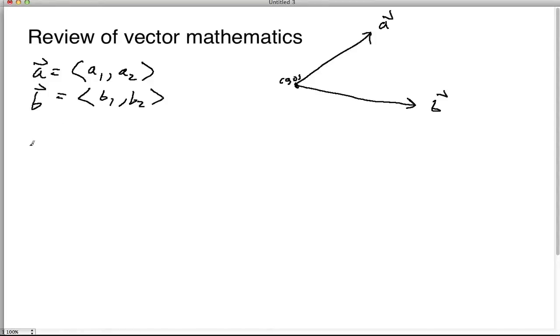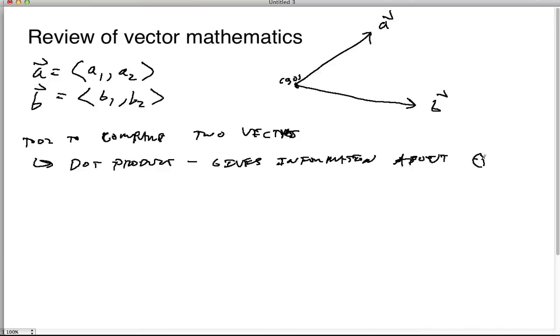And so one of the important tools we want is a tool to compare two vectors. So one such tool is the dot product. And what it really does is it gives information about the angle between the two vectors. So it gives information about theta.